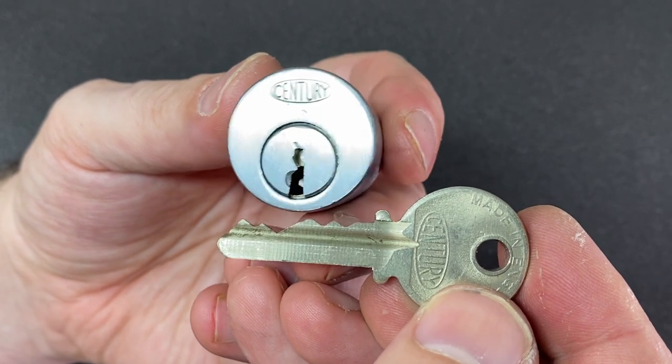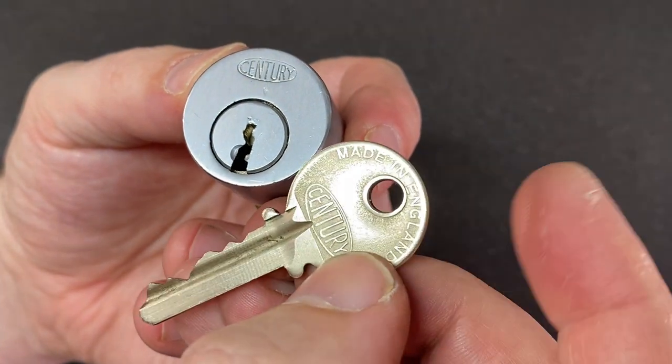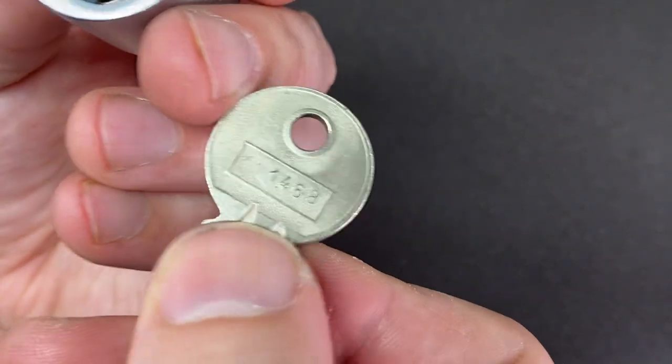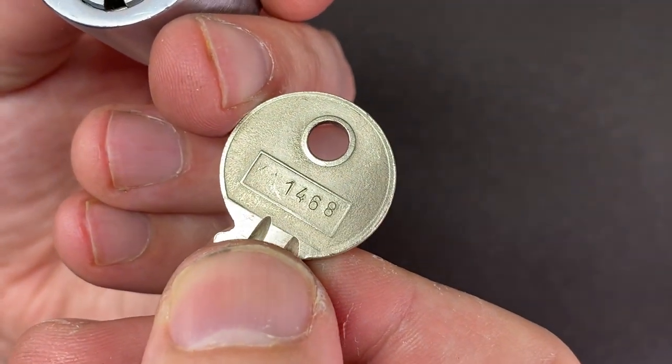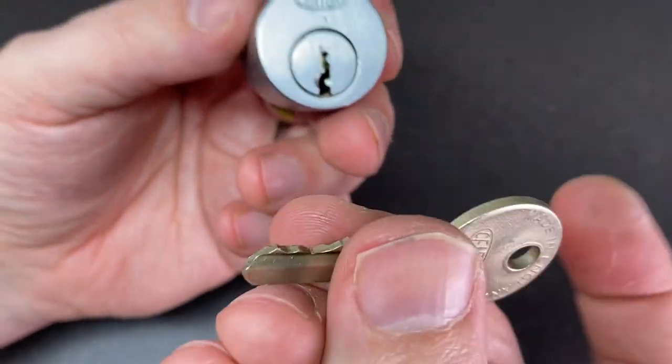Hello again, it's Lock Noob, and today we're going to pick this cute little Century lock. Don't know anything about it. It says it's made in England, so it's an English lock. Looks like it might have been part of a suite looking at the code on here, or no, it hasn't got enough numbers for the key.